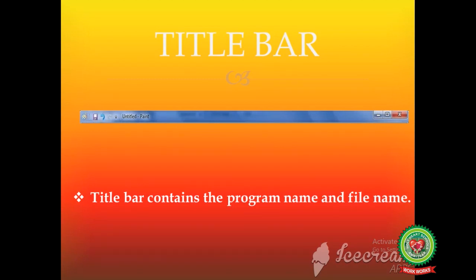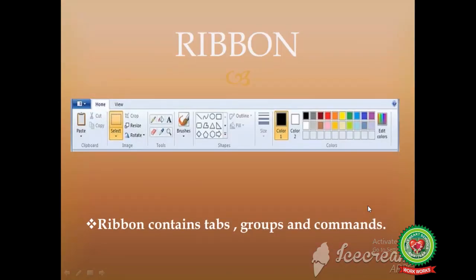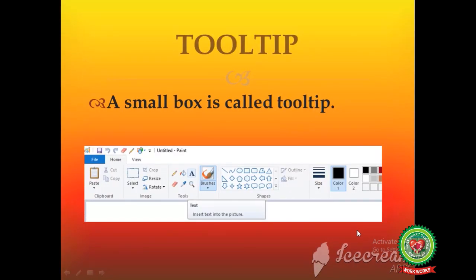Number one: title bar. Title bar contains the program name and file name. Number two: ribbon. Ribbon contains tabs, groups, and commands. I had also discussed tooltip — a small box is called a tooltip.